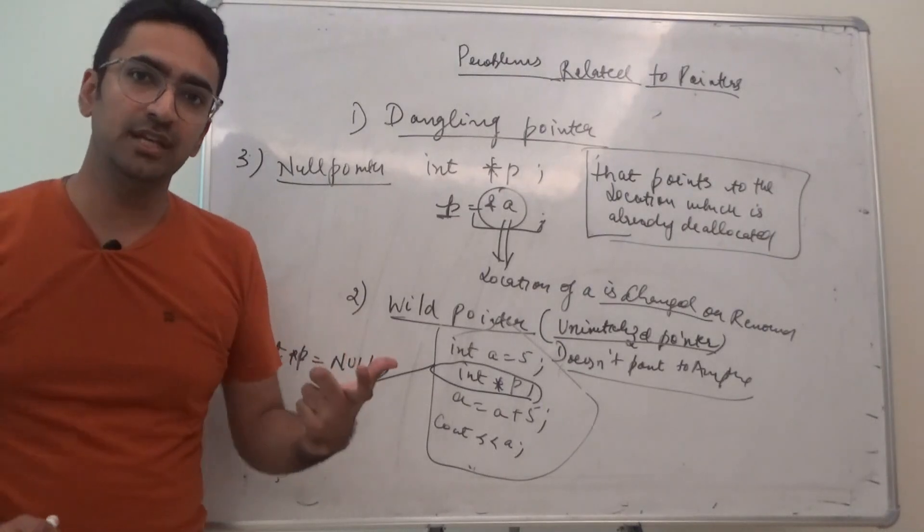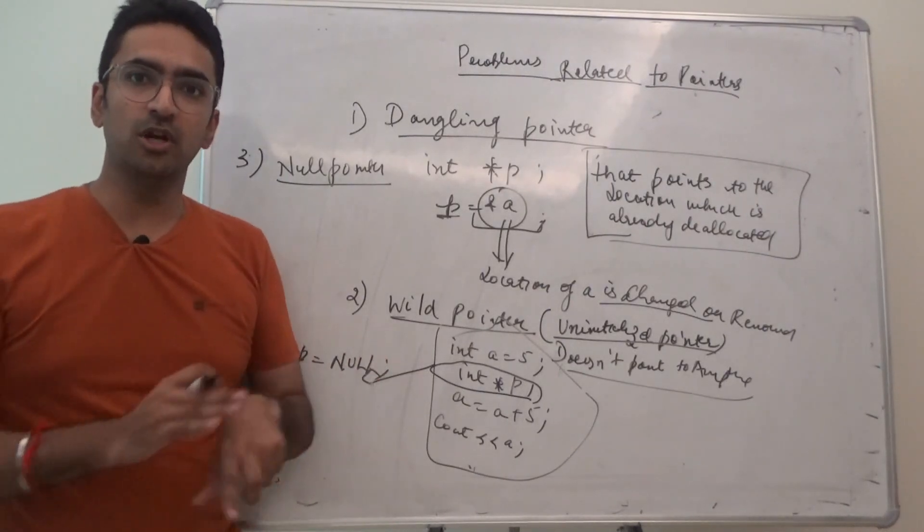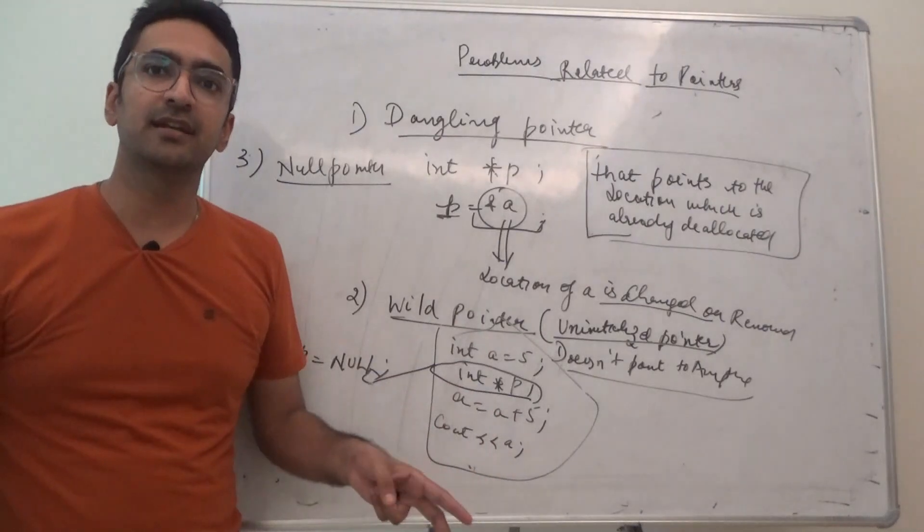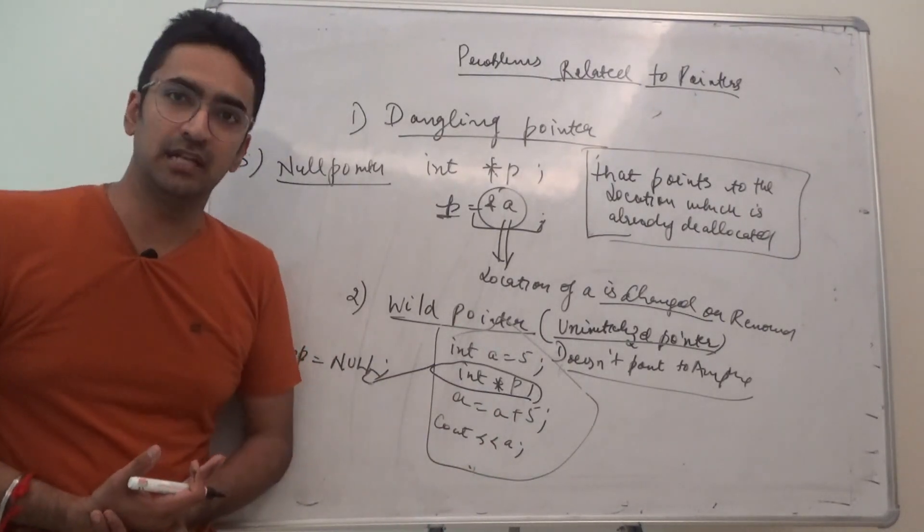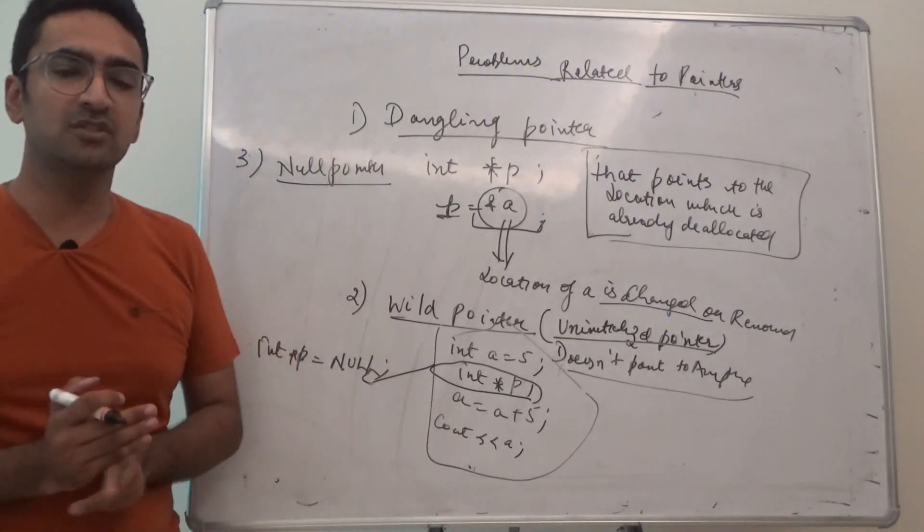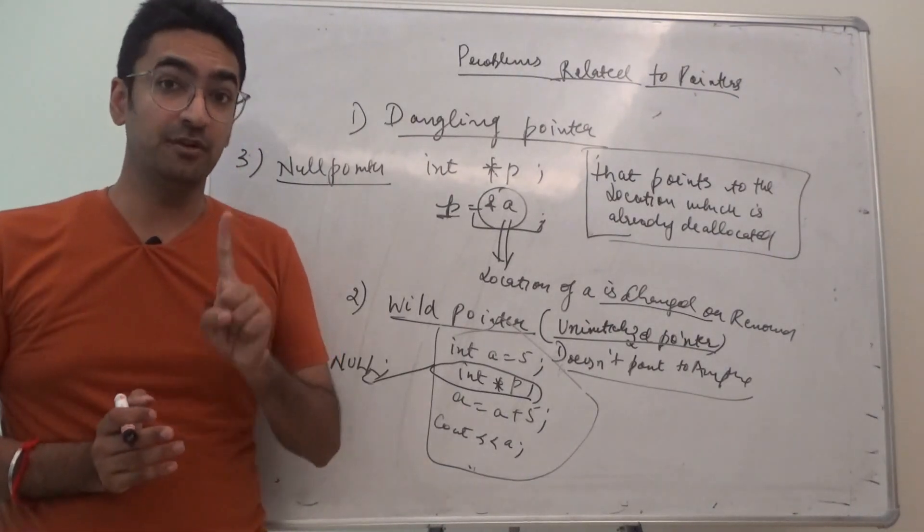P is not pointing to any other location. It is actually assigned as null value. So it will not point to anything. Rather than not pointing to anything, give it as null. That is why null pointer is also used in, if you remember,